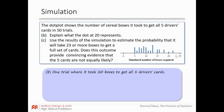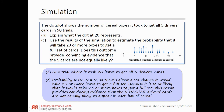Looking at the dot plot, 23 or beyond never occurred in any of the 50 trials — so the estimated probability is zero out of 50, or 0%. Since 0% is less than the 5% threshold, it is so unlikely that it would take 23 or more boxes to get a full set that this result provides convincing evidence that the five NASCAR driver cards are not equally likely to appear. If they were equally likely, this should have happened more than 5% of the time.